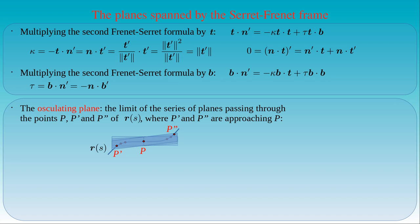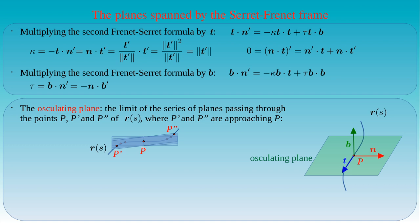The osculating plane at a given point P of the curve can also be determined by the Frenet-Serret frame at that point, since the plane is spanned by the tangent T and the normal N of the curve at P. This also means that the binormal vector B is the normal of the osculating plane at P. Based on the Frenet-Serret frame, we can also define the normal plane, spanned by N and B — whose normal vector is the tangent T — and the rectifying plane, spanned by T and B, whose normal vector is the normal N.